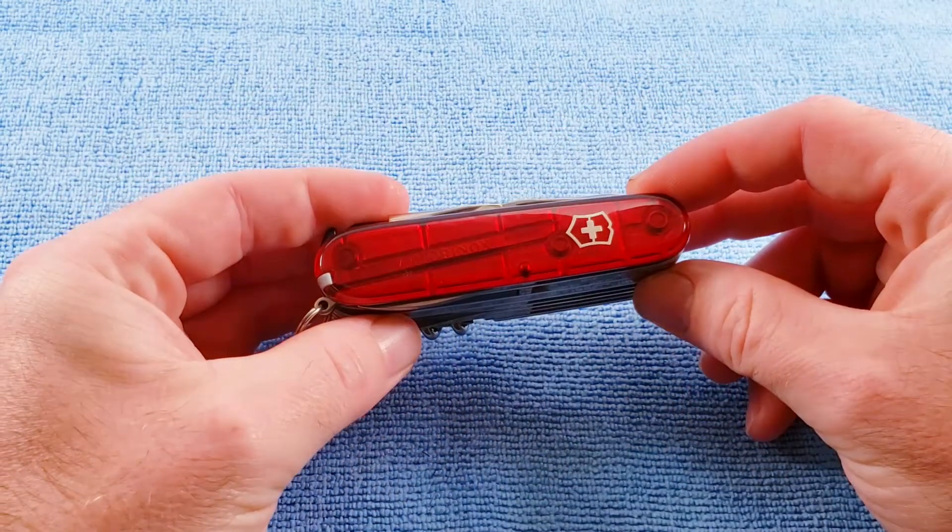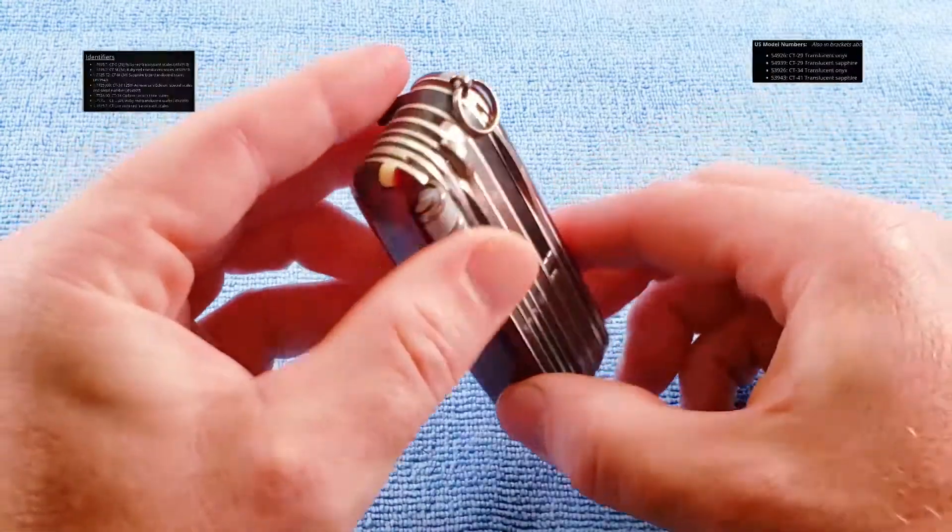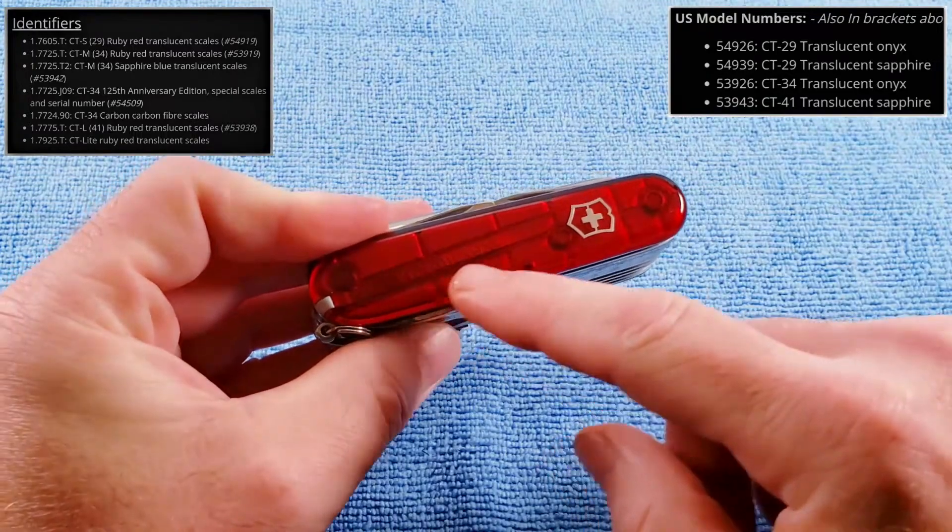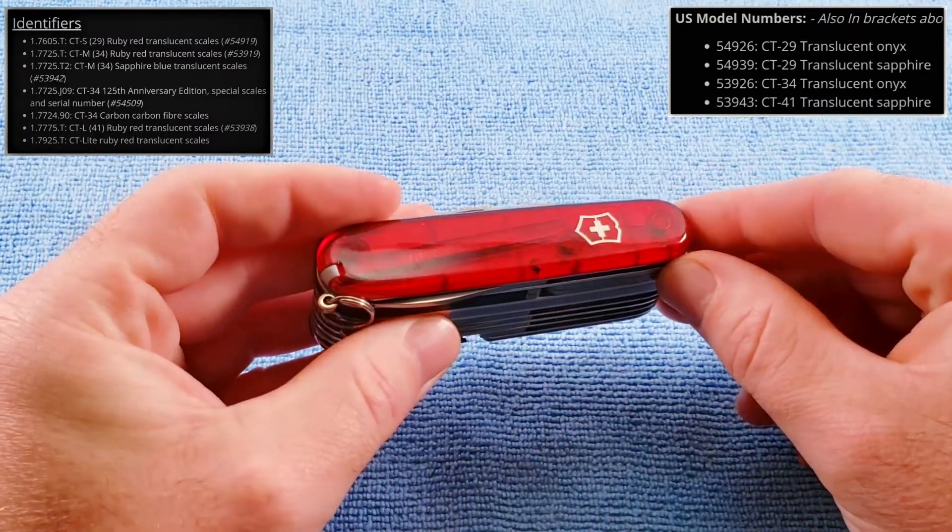Features ruby translucent red scales that are also of the plus scale variety, but the Cybertool line was available in a multitude of different colors and styles.